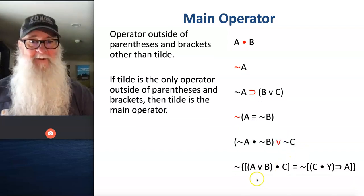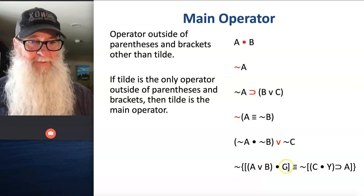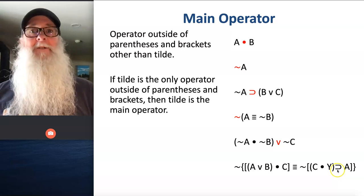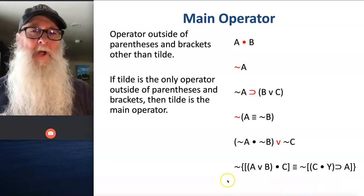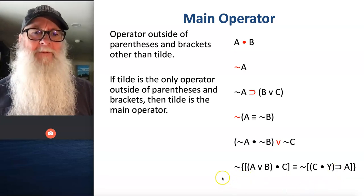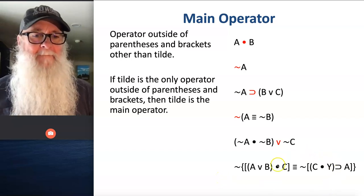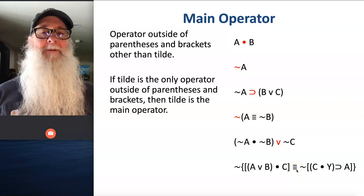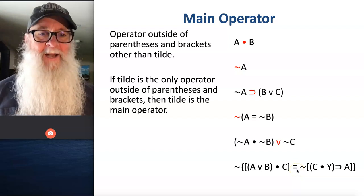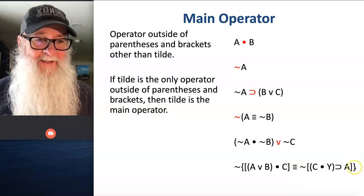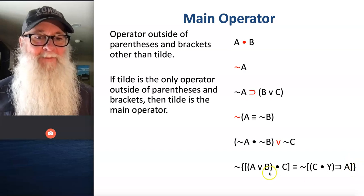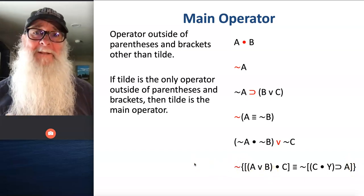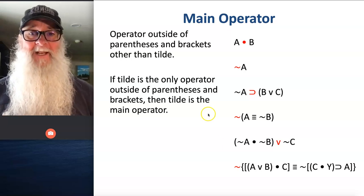Look at this mess. We've got a tilde, a wedge, a dot, a triple bar, another tilde, another dot, and a horseshoe — a lot of operators. Which is the operator outside of parentheses and brackets? You may be tempted to say the triple bar is the main operator because it doesn't appear to be in any brackets, but if we look carefully, we can see it's in this third set of brackets on the outside. So in this case, tilde is the main operator of this statement.